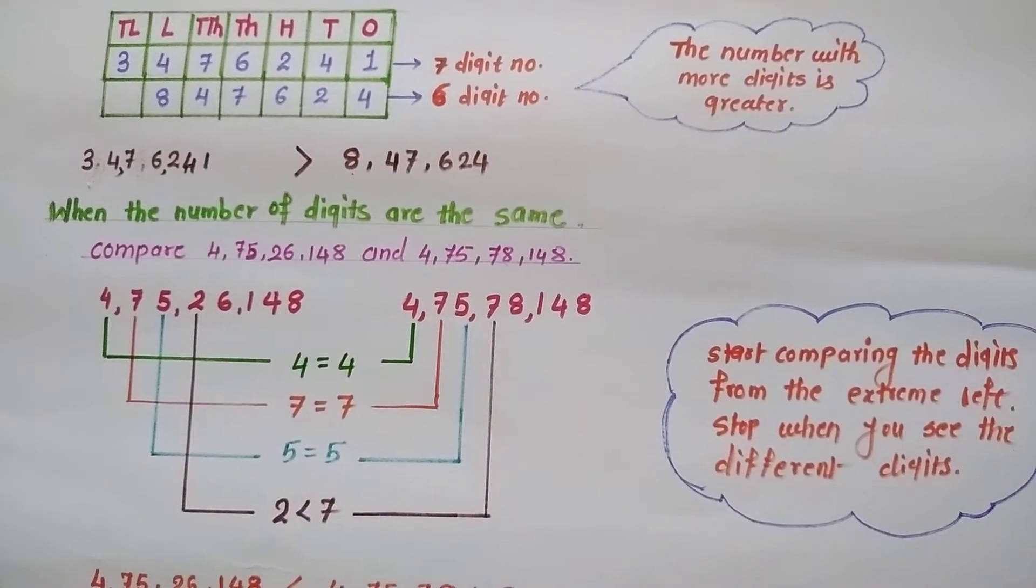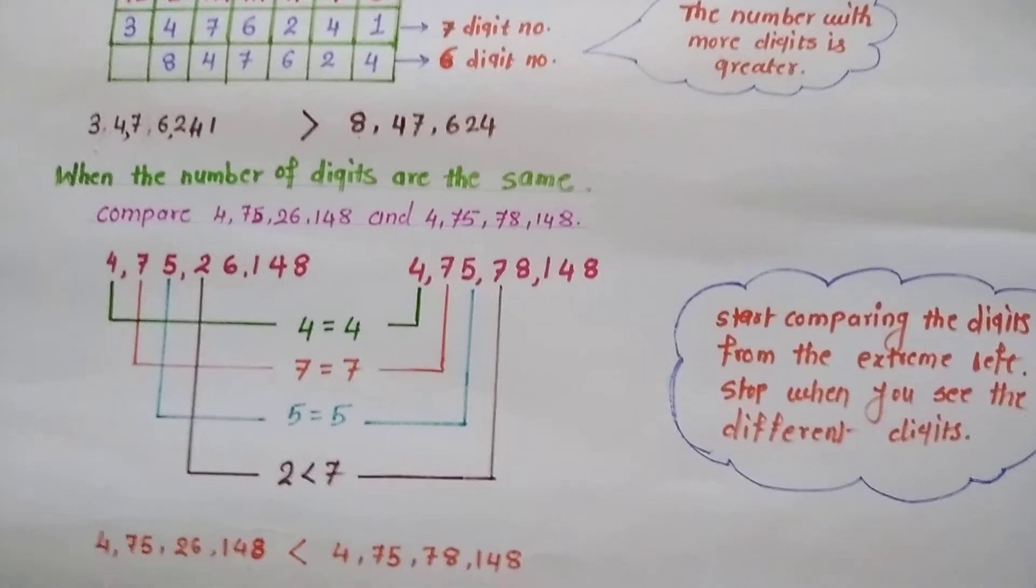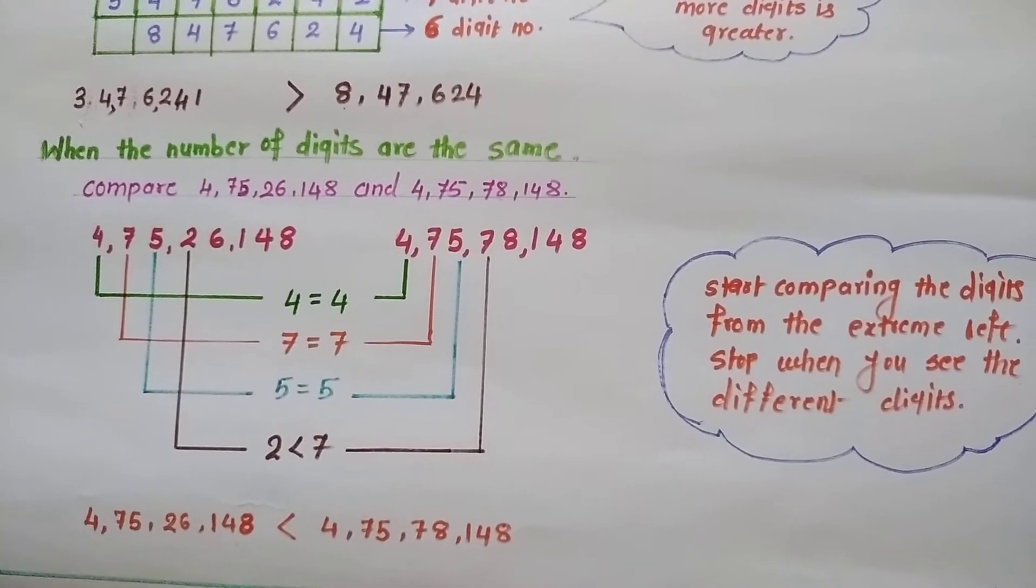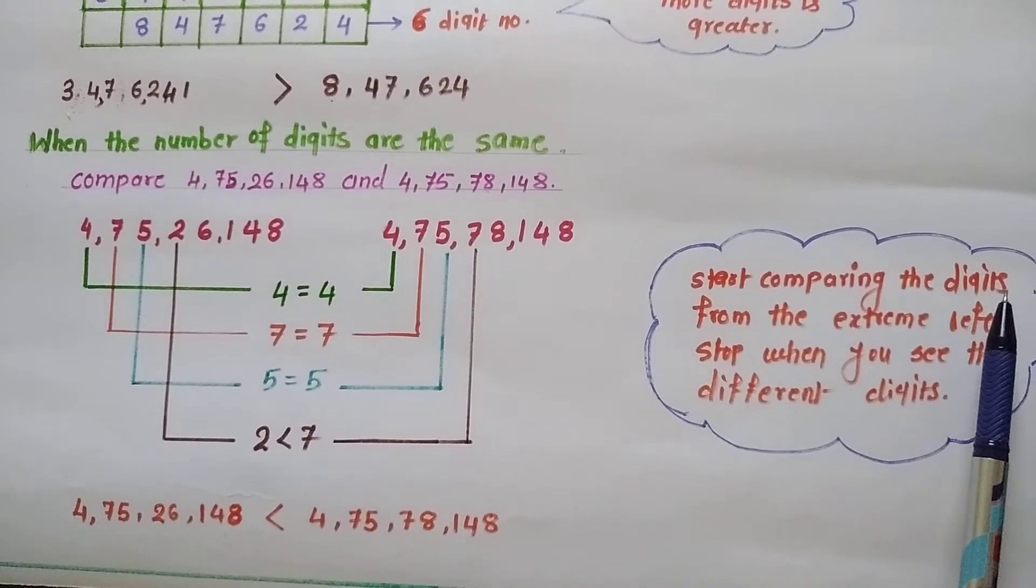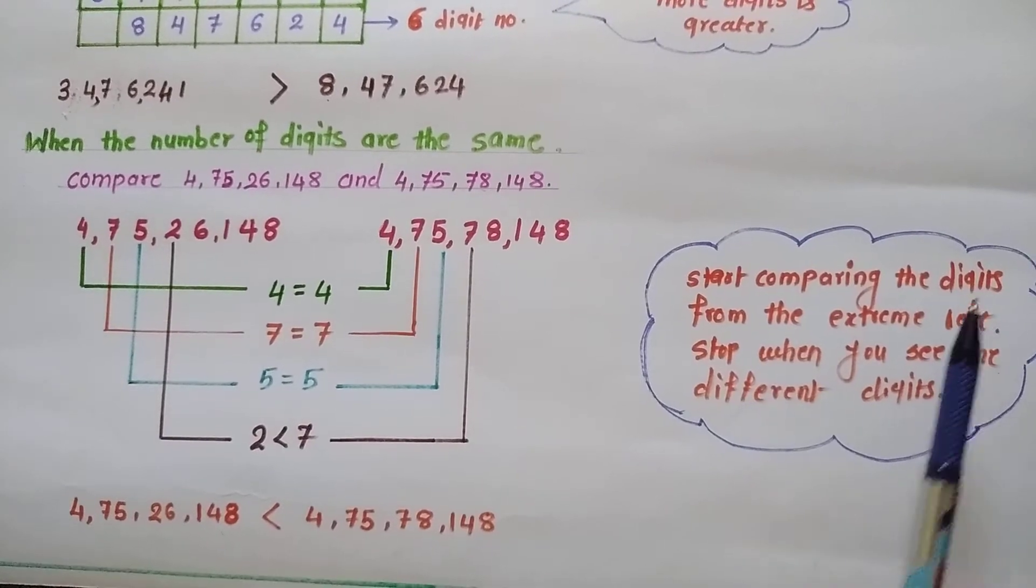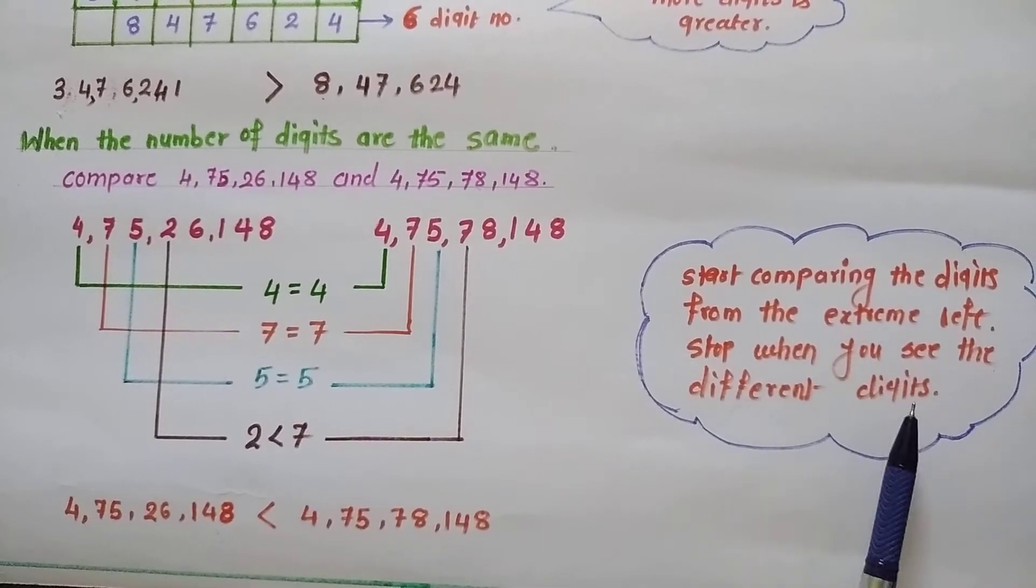So, in such cases, how we will compare the numbers? When the number of digits are same, we need to start comparing the digits from the extreme left and stop when you see the different digits.